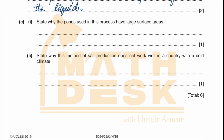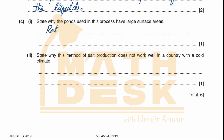State why the ponds used in this process have large surface areas. The large surface area increases the rate of evaporation, because evaporation depends on the surface area. The larger the surface exposed to air and sunshine, the quicker the evaporation, and more evaporation takes place in less time.